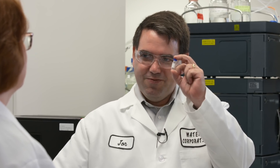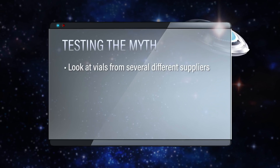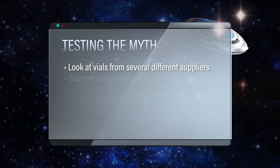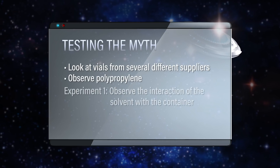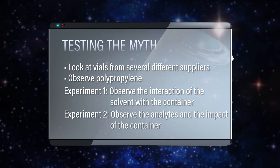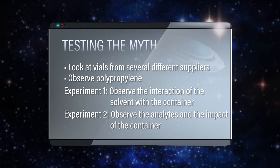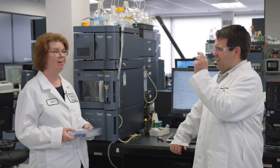Kim, I'm having a hard time believing something as insignificant as a vial could cause problems to chromatography. Look at it — it's just a little vial. You are going to be surprised. Let's set up an experiment. What we can do is look at vials from several different suppliers, and we'll also look at polypropylene just to make it interesting. We can set up one experiment to look at the interaction of the solvent with the container, and then also look at the analytes and see what the impact of the container is.